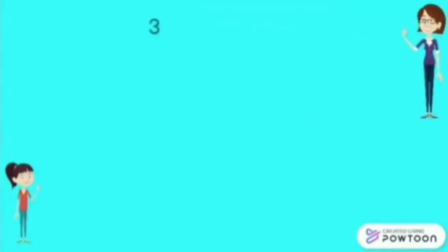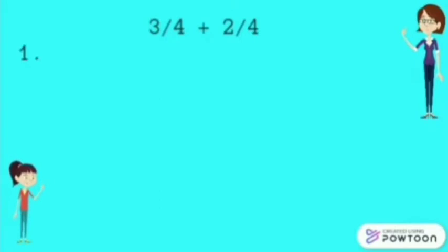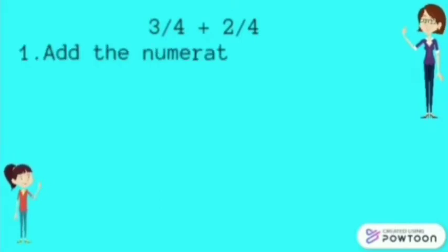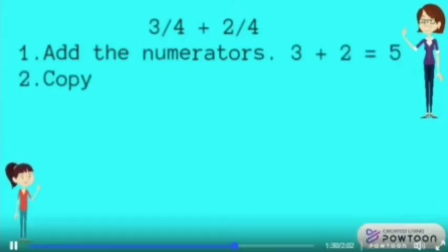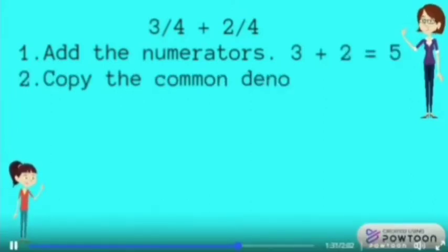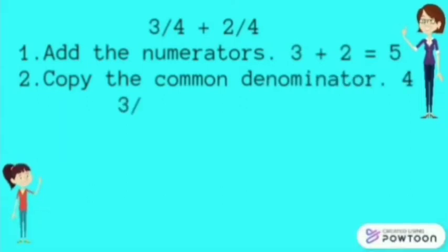For our third example, we will add three-fourths plus two-fourths. First, add the numerators. Three plus two is five. Next, copy the common denominator, and it is four. So, three-fourths plus two-fourths is five-fourths.